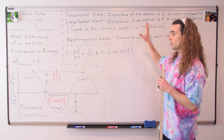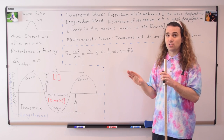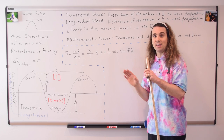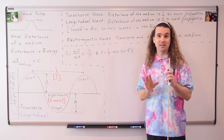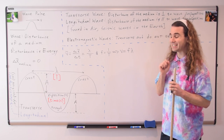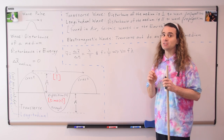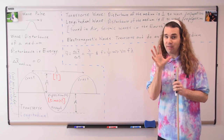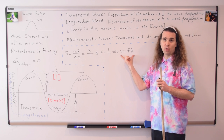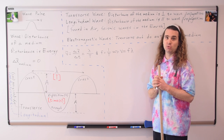A lot of the terms we're using and the graphs we're drawing are very similar to the ones we use for simple harmonic motion, because simple harmonic motion and waves are related. However, simple harmonic motion does not have a wavelength. So please do not find wavelength for simple harmonic motion, and do not use this wave velocity equation for simple harmonic motion.